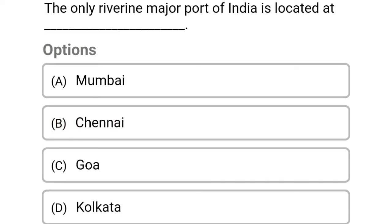The only riverine major port of India is located at: Option A: Mumbai. Option B: Chennai. Option C: Goa. Option D: Kolkata. The correct answer is Option D, Kolkata.